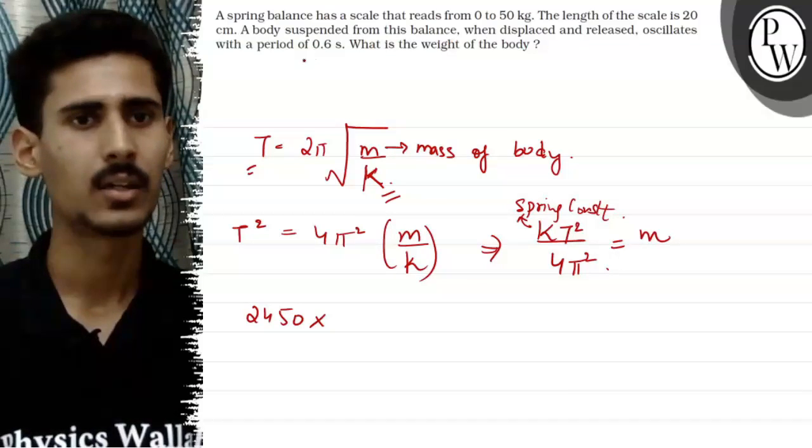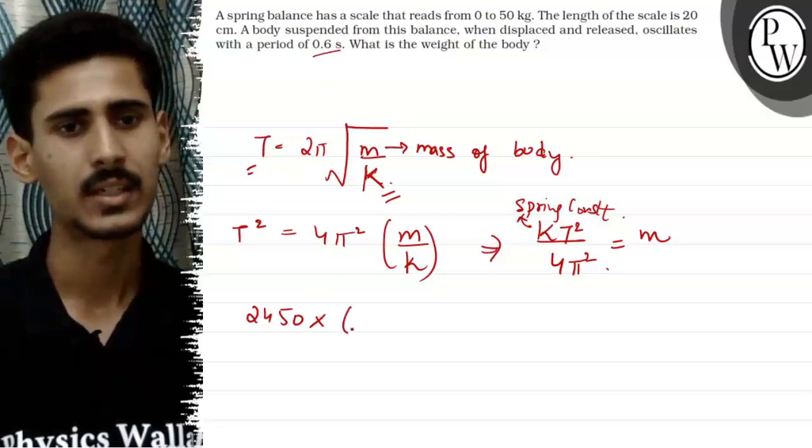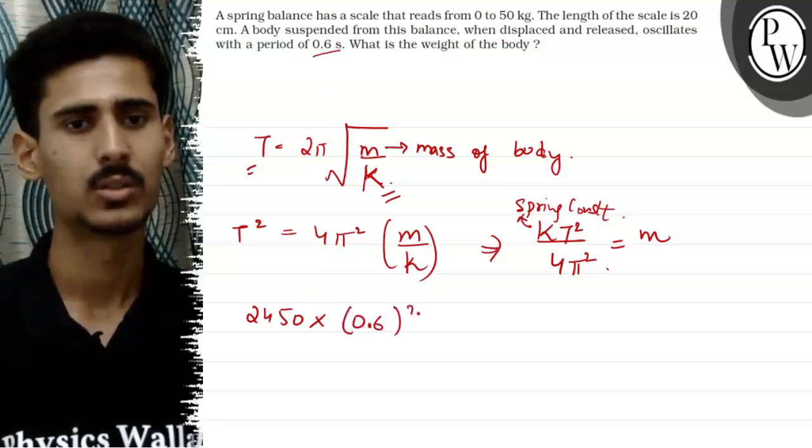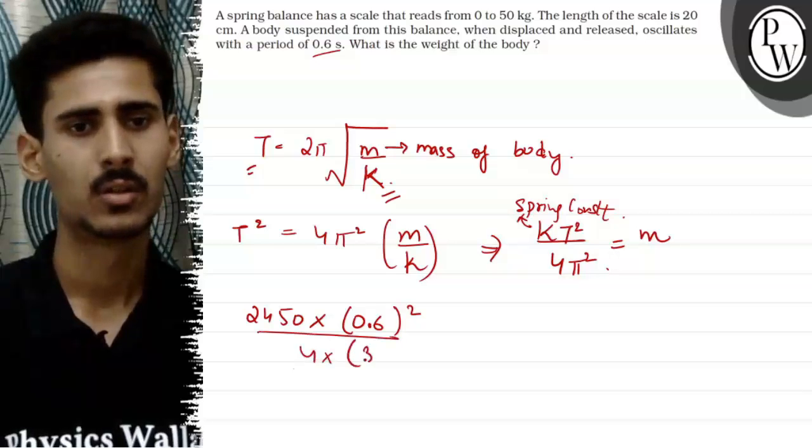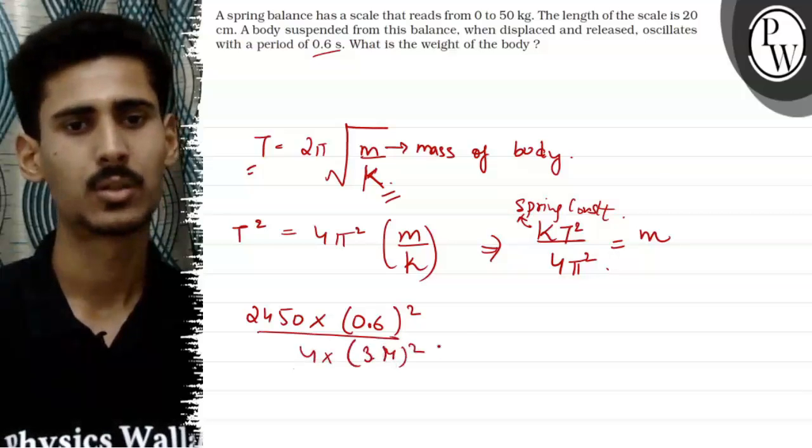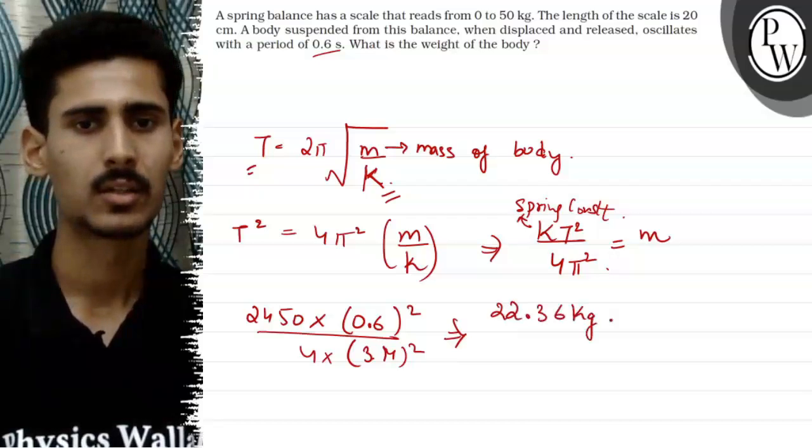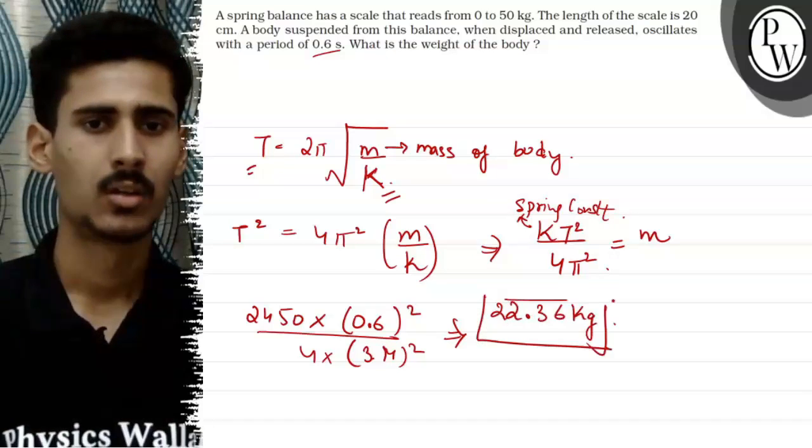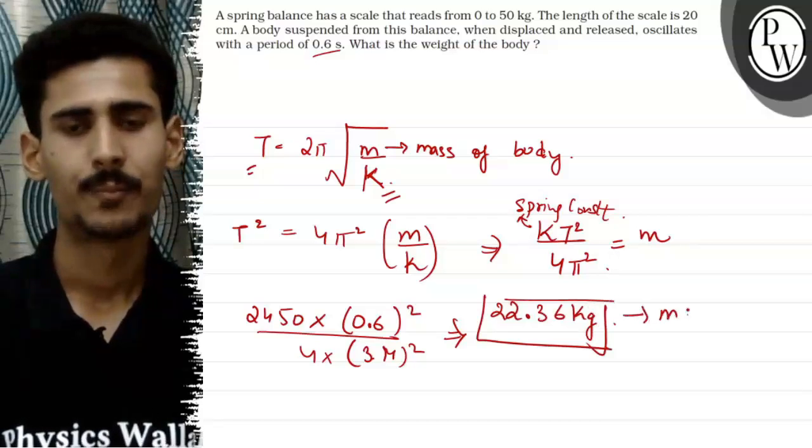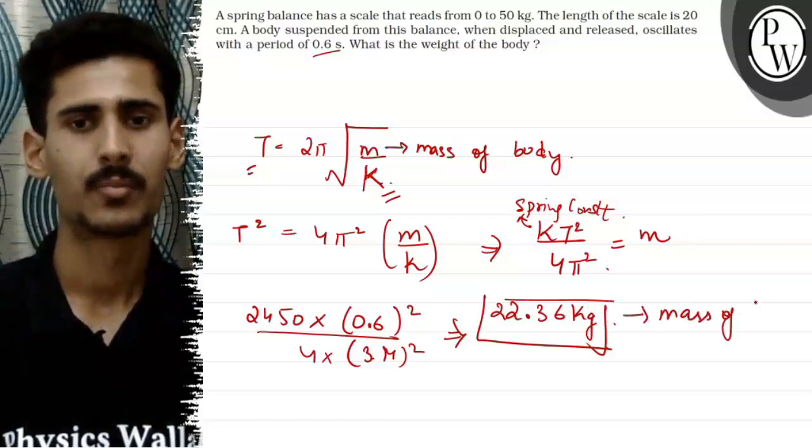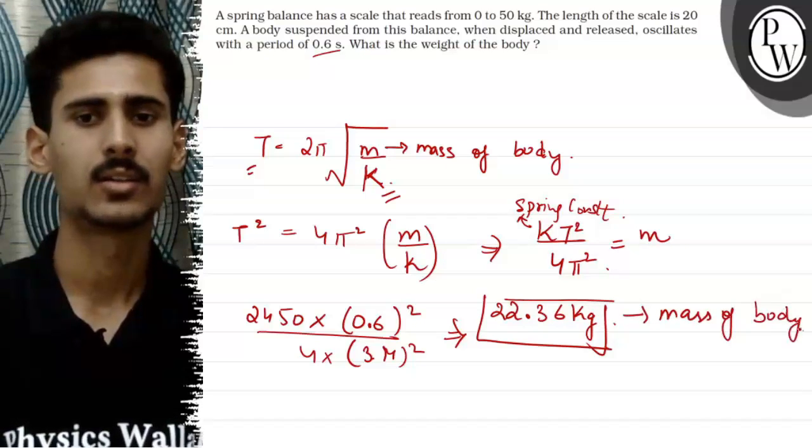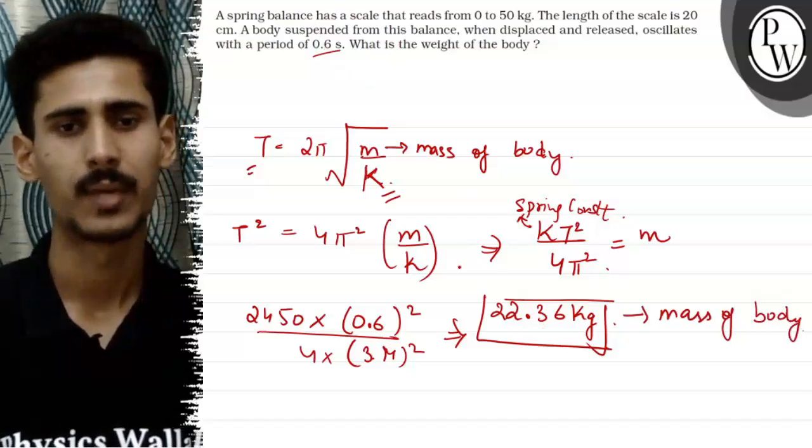T, the time period of the oscillation is given 0.6 seconds. So we will write 0.6 whole square upon 4 into 3.14 square. 22.36 kgs. So this is the mass of the body that is oscillating from this spring balance.